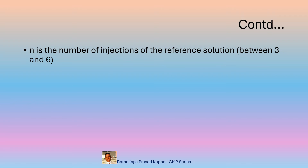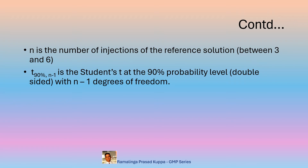N is the number of replicate injections. The minimum requirement is 3 and the maximum is 6. T90% N−1 is the Student's T at the 90% probability level, double-sided, with N−1 degrees of freedom. These are statistically derived figures obtainable from the internet; however, the table is provided in the next slide for reference. Remember that the T90 values should be taken for N−1 degrees of freedom. That means for 3 injections, the T90 value for 3−1 = 2 degrees of freedom should be considered. Similarly, for 4 injections it should be 3, for 5 injections the value of 4, and for 6 injections the value of 5 should be considered.